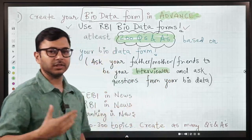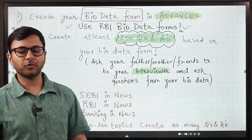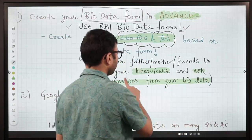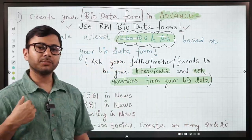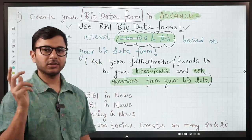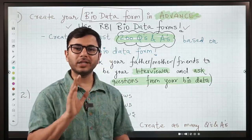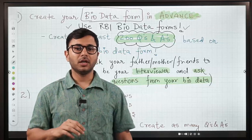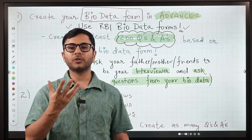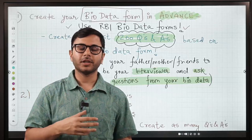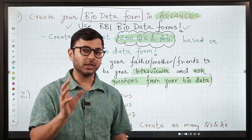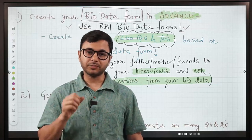Sit with them for 30 minutes, 40 minutes, an hour every day. Give them your bio data form, ask them to be your interviewer and ask questions from your bio data form. Just write it down. This way you will easily be able to create 200 to 300 questions. And believe me, when you are in the interview panel and you realize that you have already prepared that question in advance, a smile on your face, confidence with which you will be able to speak out that answer will have a very good impact on the interviewer.